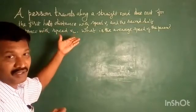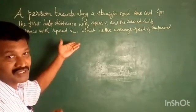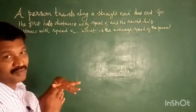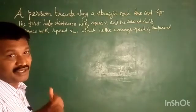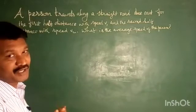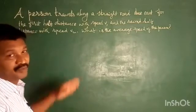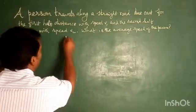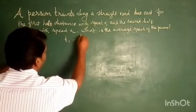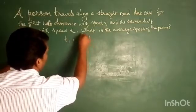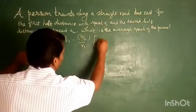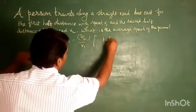So total distance by total time taken is the average speed. Now t1 equal to s by 2 by v1.